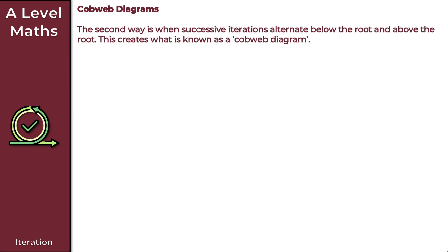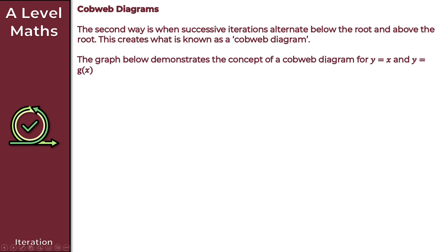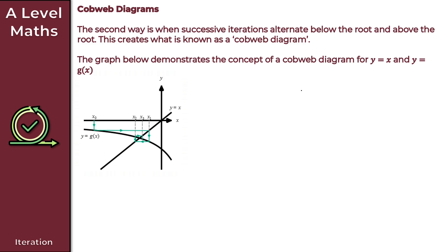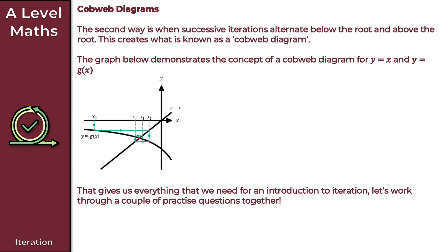To finish with staircase diagrams, we now move to the second method which uses something called cobweb diagrams. The second way is when successive iterations alternate below the root and above the root, and this creates what is known as a cobweb diagram. The graph demonstrates the concept of a cobweb diagram for y equals x and y equals g of x. We're given x₀ as our starting value. By using iteration, we obtain x₁, x₂, x₃, and so on, and once plotted this produces a cobweb diagram. We converge to the root — it just keeps getting closer and closer, converging.